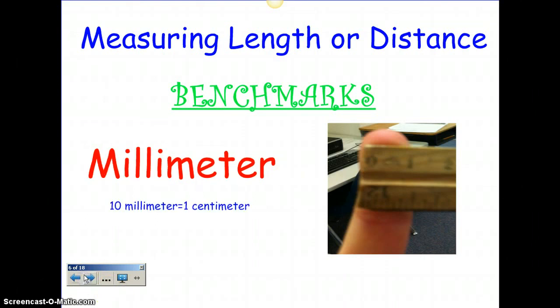Next we have a millimeter. Ten millimeters equal one centimeter. So if a centimeter is the distance across the tip of your finger, a millimeter is about across the tip of your nail, because it's way smaller — you need ten of them to make one centimeter. So a millimeter is smaller than a centimeter.